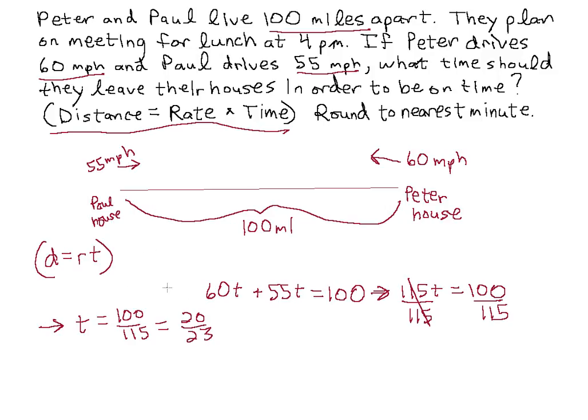Now note, this isn't our answer right here. Our rate is given in miles per hour, so our fraction is just the part of an hour that it takes for Paul and Peter to meet. So we want to convert our time into minutes. So let's go ahead and do that. We want to take 20 over 23 and multiply it by 60, because this is part of an hour and there's 60 minutes in an hour.